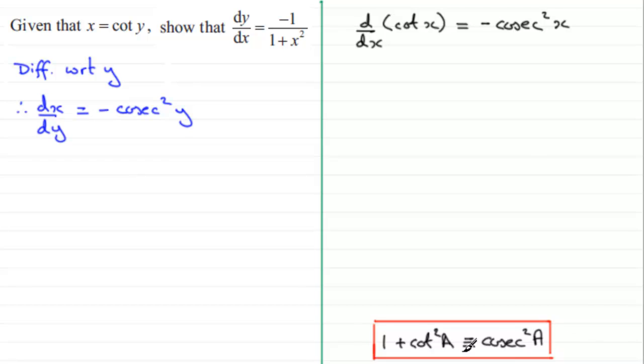Well, cosec squared y, then, would be equal to 1 plus cot squared y. But we've got a negative sign in front of this, so we've got to put that as minus all of 1 plus cot squared y.